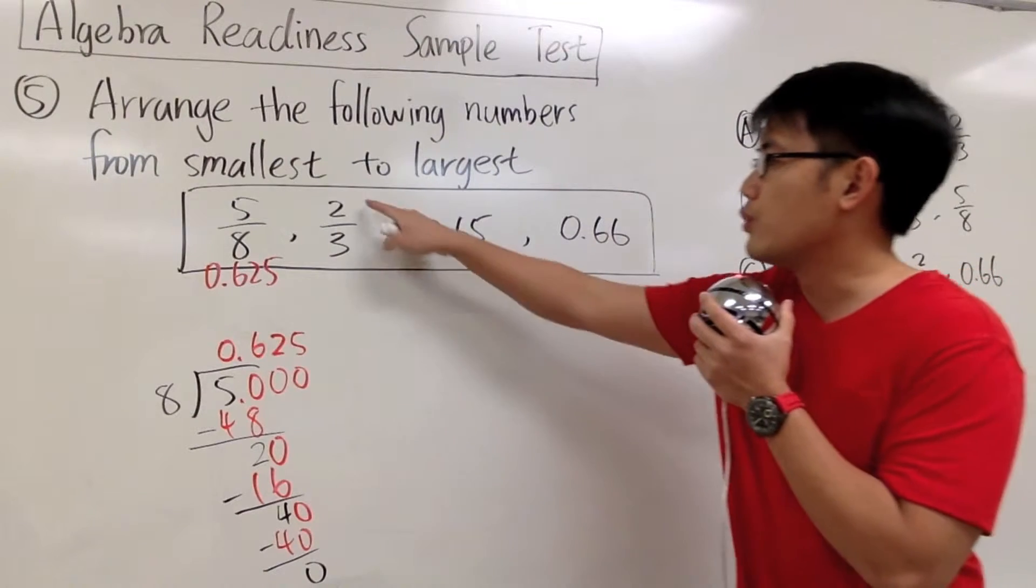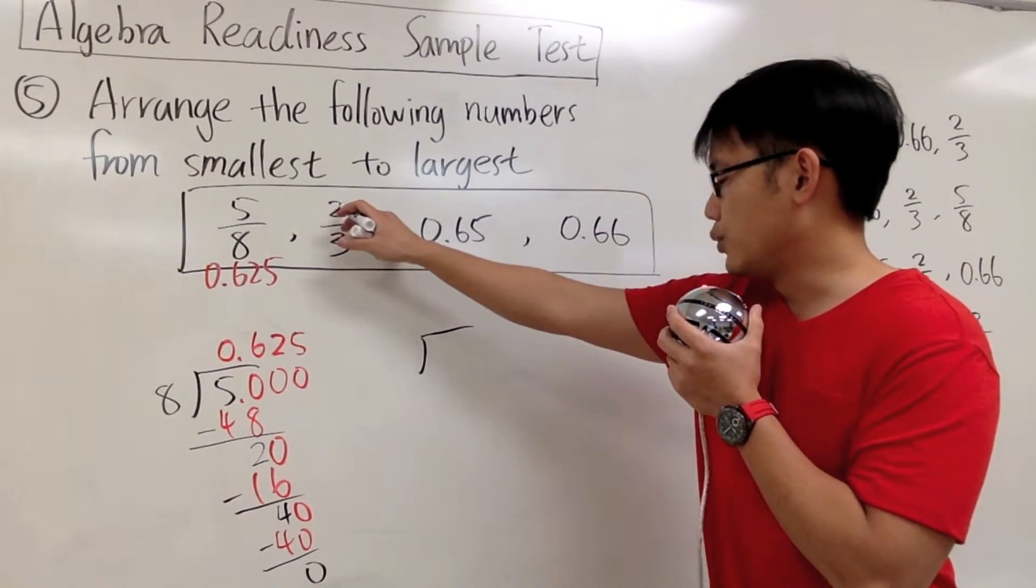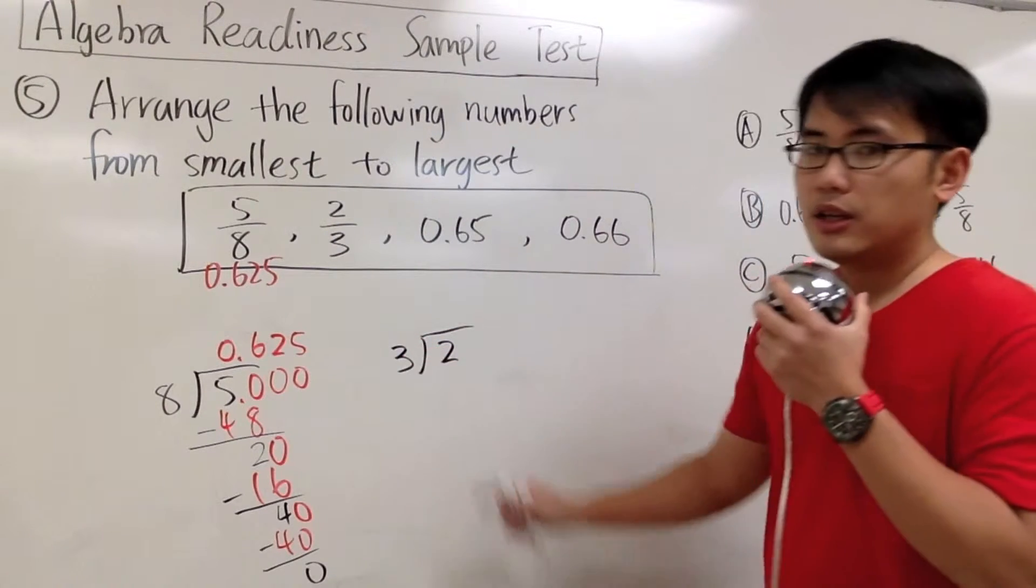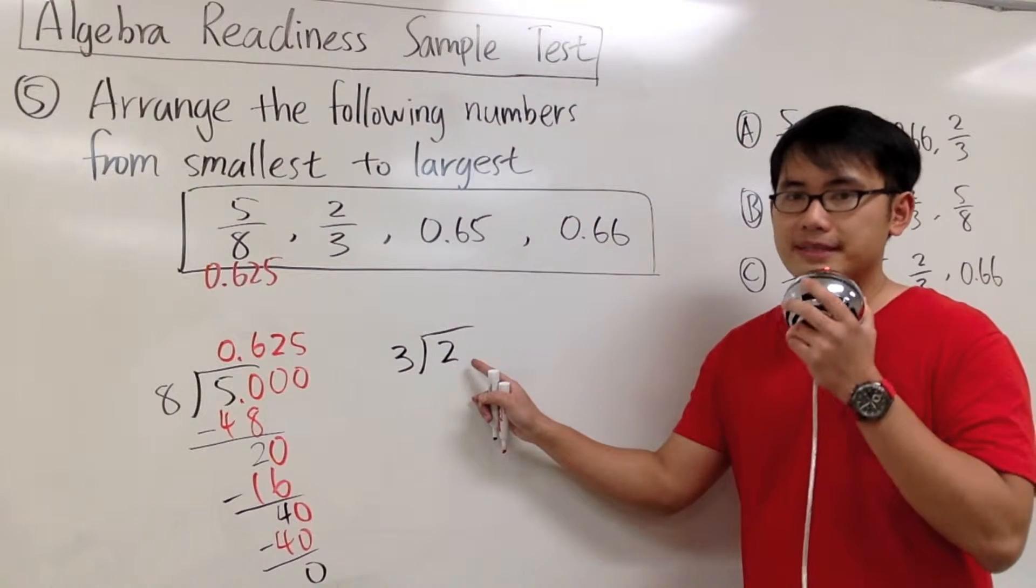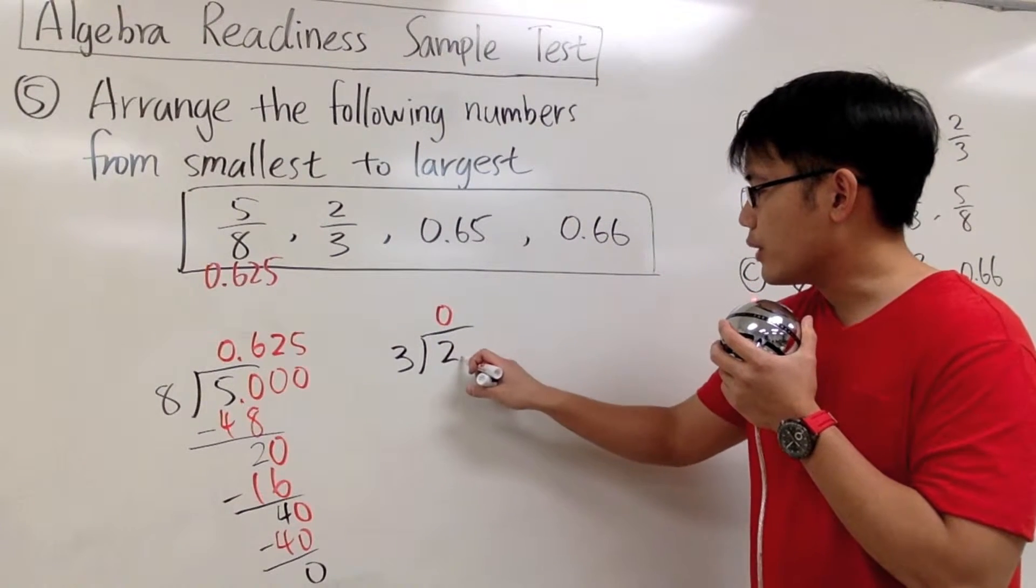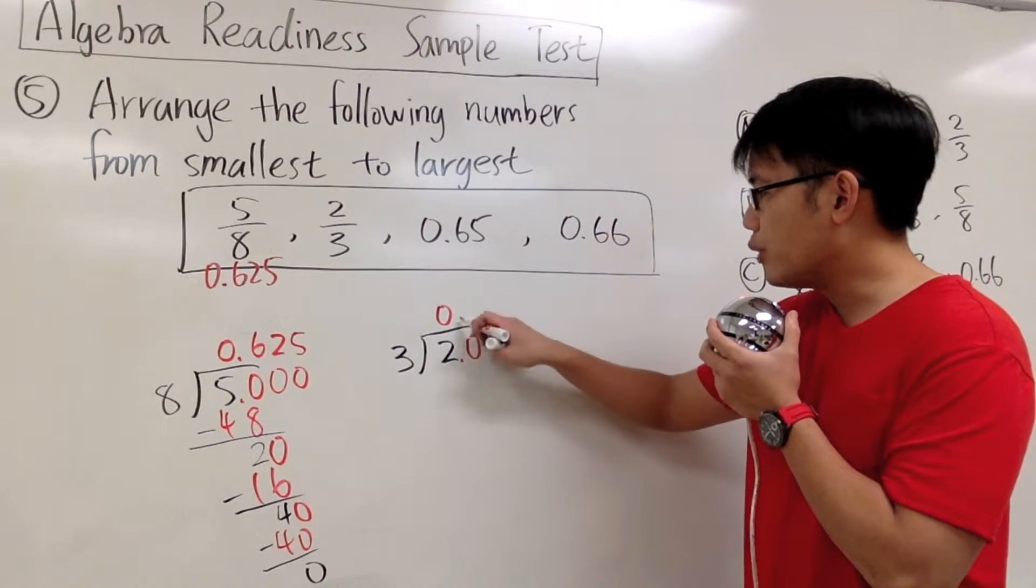And now let's do the same for 2 over 3. So long division in action. The 2 is on the top, so put it inside. And the 3 is on the outside. 3 goes into 2 0 times. So we indicate the 0 on the top. So for the 2, we'll attach a decimal point and then put down a 0. And then we'll line out with the decimal point on the top.